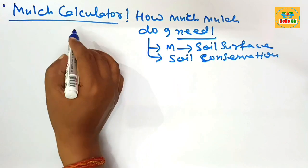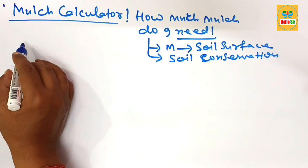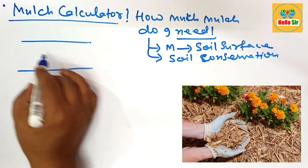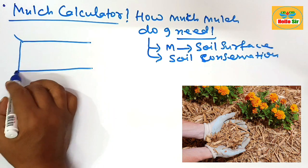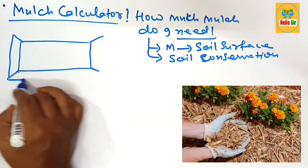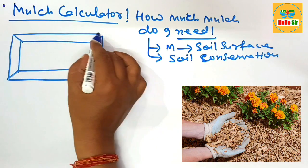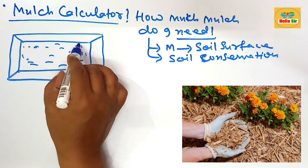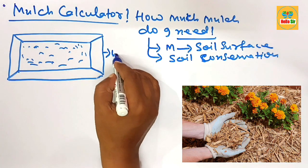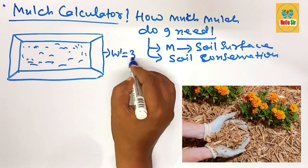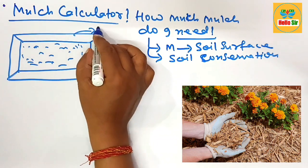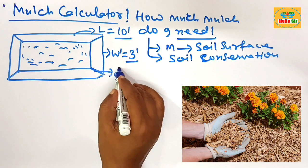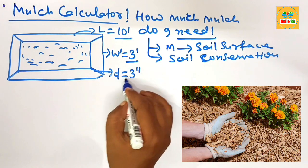What is a mulch calculator and how much mulch do I need? Suppose you have a flower bed. First, we make a rough diagram for the flower bed. The mulch quantity is placed over that surface. The width of the flower bed is 3 feet, the length is 10 feet, and the depth of mulch is about 3 inches.